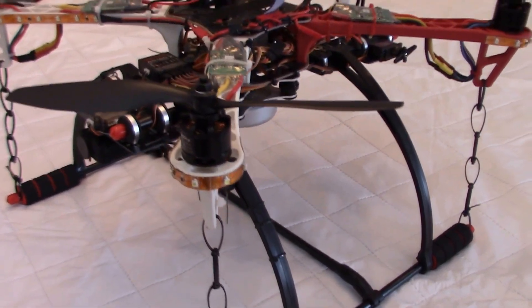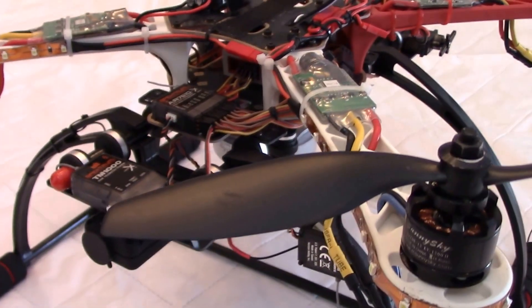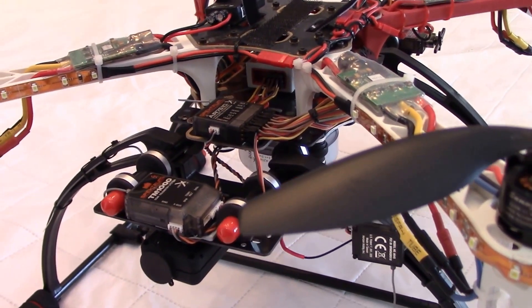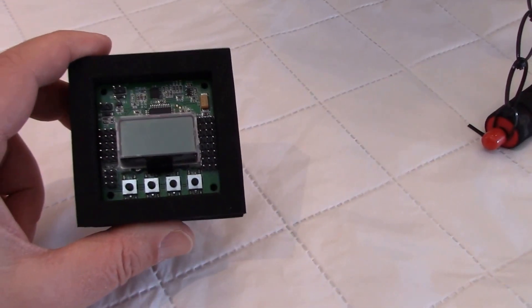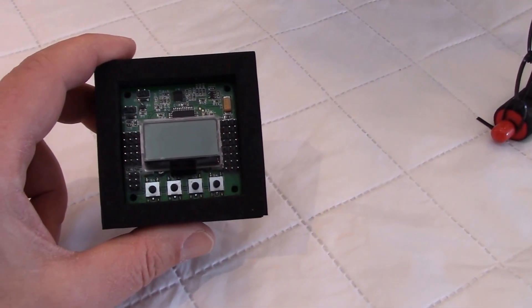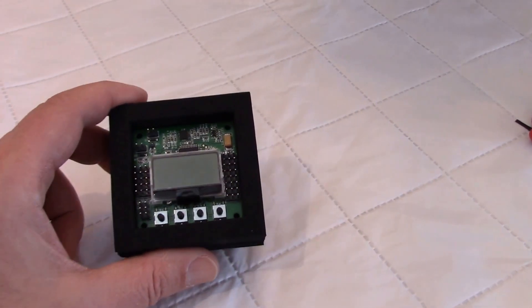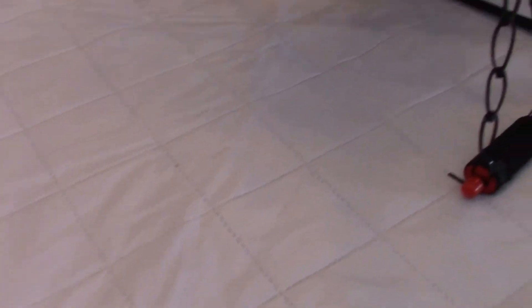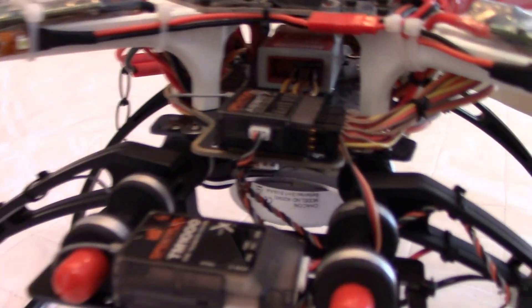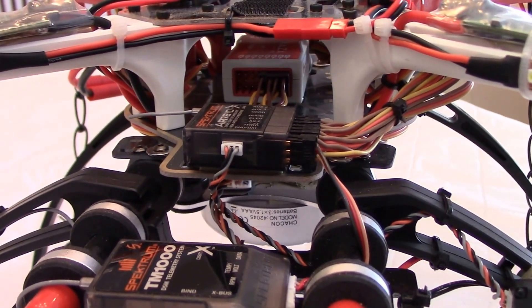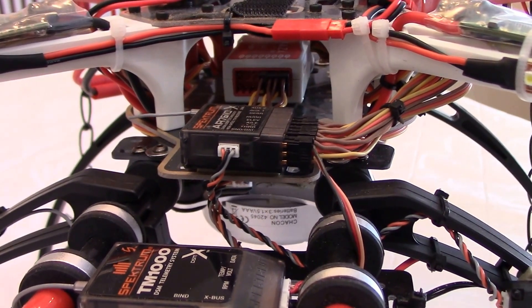In this build originally I had a Hobbyking KK 2.1 controller, which is this thing over here. This is what I used when I built this drone three years ago. But after that I wanted GPS to program return home, so I switched to a Naza Lite. You can see here the white and red box, that's the Naza Lite with the GPS kit. The GPS is here in the back.